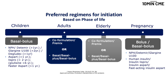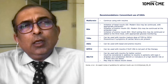Different patient groups require different insulin approaches. Children typically require full insulin supplementation providing both basal and prandial insulin. Many adults can be managed with pre-mixed or co-formulations. During pregnancy, the major requirement is for prandial insulin supplementation, though some women may also require basal-bolus therapy.